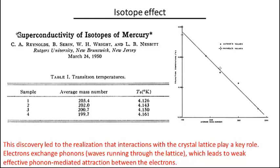But there was a breakthrough paper back in the beginning of the 50s. I'm showing here the title of this paper, superconductivity and isotopes of mercury. And to appreciate the importance of this paper, let me just remind you the basic picture of what a metal is.